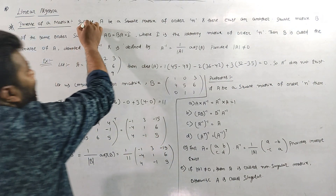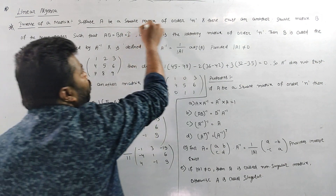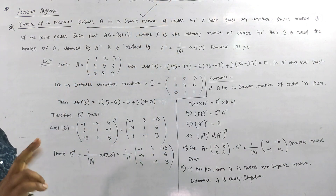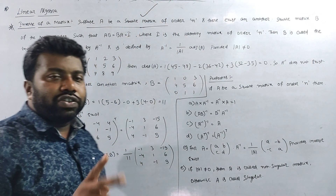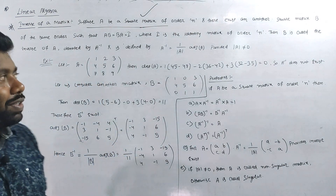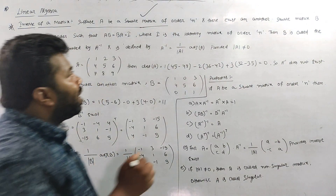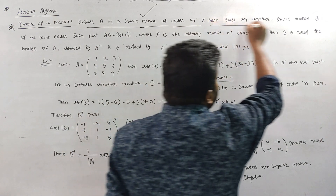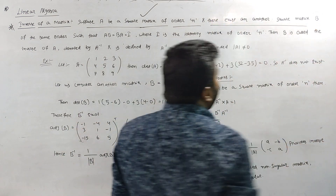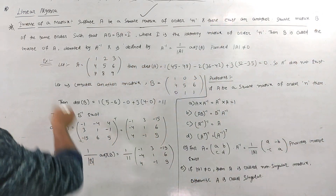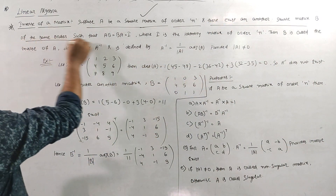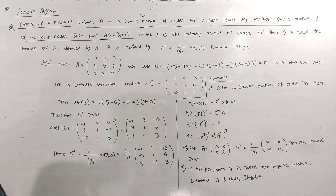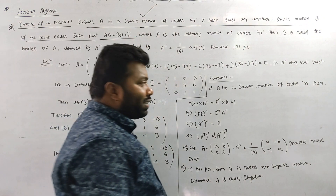Suppose A and B are square matrices. If A is a square matrix — it means two cross two, three cross three — it means the number of rows and number of columns are the same. Of order N, there exists another square matrix B of the same order such that A times B is equal to B times A, which is equal to I.